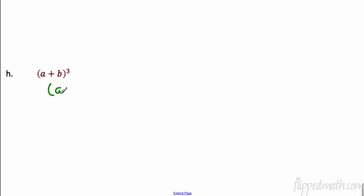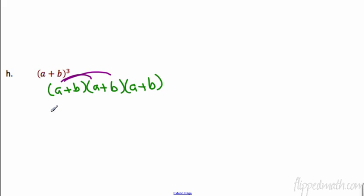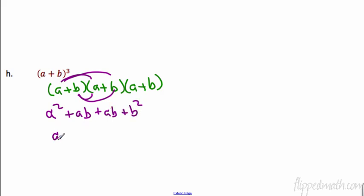Let's see how you did on example h — I'm going to work it out step by step. We have a plus b times a plus b times a plus b. I'm going to do the first two. We have a times a is a squared, a times b is ab. Then b times a is ab, and b times b is b squared. So we get a squared plus two of these ab things — because we have 1 ab plus 1 ab — that's 2ab plus b squared. That's what we get when we multiply the first two together.